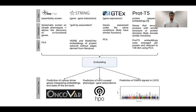Here we see an overview of this project. On the top, we see the four data modalities we're currently encoding in our embedding: on the left, an essentiality screen from the DepMap consortium, the STRING gene-gene interaction network, GTEx gene expression data, and ProtT5, the protein sequence embedding.